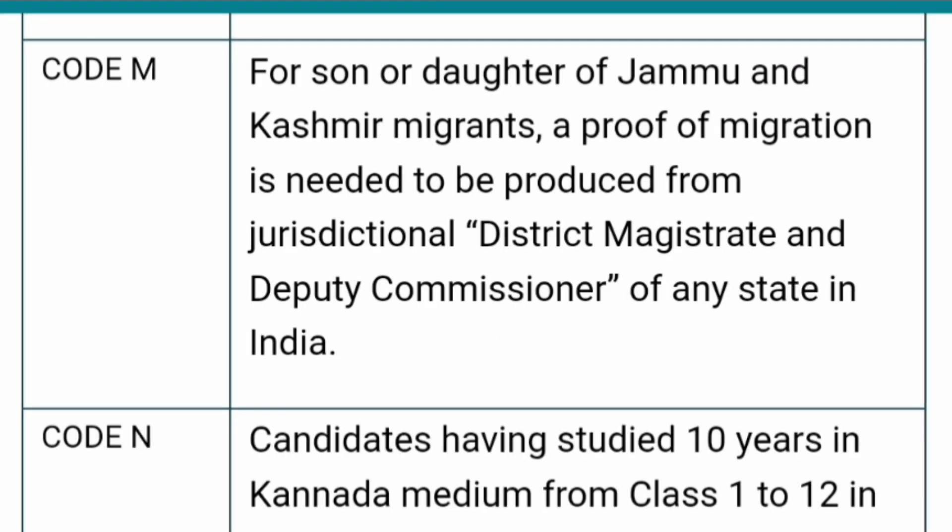Code M is for the son or daughter of Jammu and Kashmir migrants. A proof of migration is needed, to be produced from the jurisdictional District Magistrate or Deputy Commissioner of any state in India. Then you can claim the Jammu and Kashmir migrant status under code M.